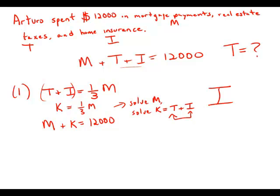Now forget statement number one. Let's focus on statement number two. Statement number two tells us last year the amount that Arturo spent on his real estate taxes was 20% of the total amount he spent on mortgage payment and home insurance. So the amount he spent in taxes is 20%, point two times mortgage plus insurance.